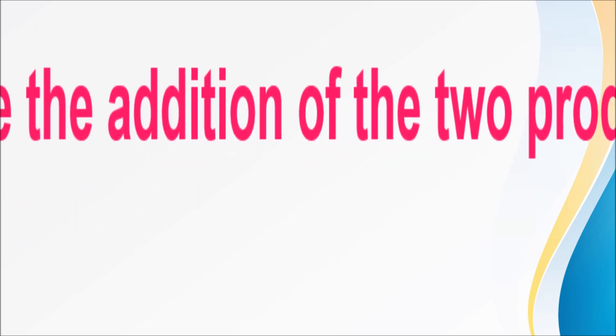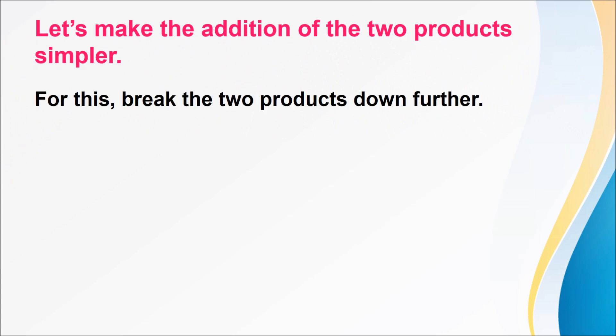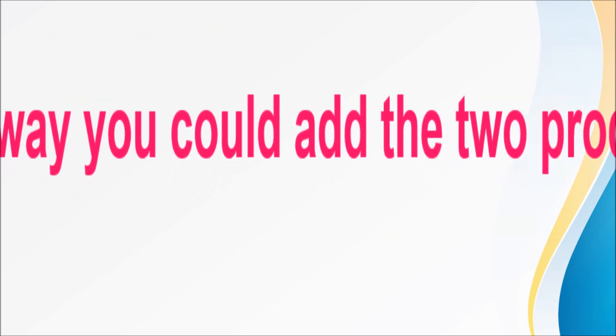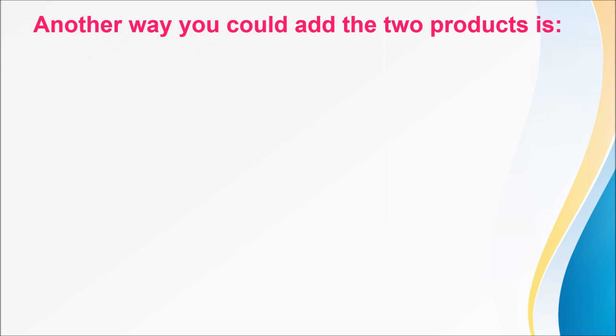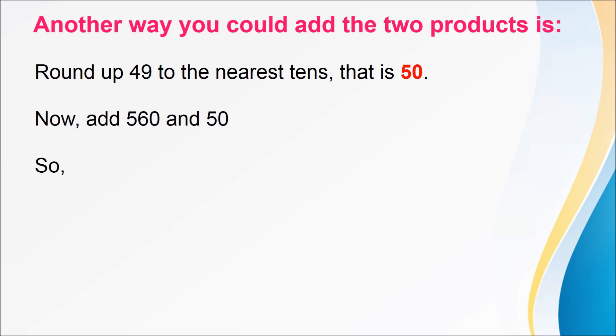Let's make this addition simpler too. For this, break the 2 products down further as 560 plus 40 plus 9 and voila! You get the answer as 609. Another way you could add the 2 products 560 and 49 is round off 49 to the nearest tens that is 50. Now, add 560 and 50 to get 610 and then subtract 1 from 610. So, 610 minus 1 is equal to 609.